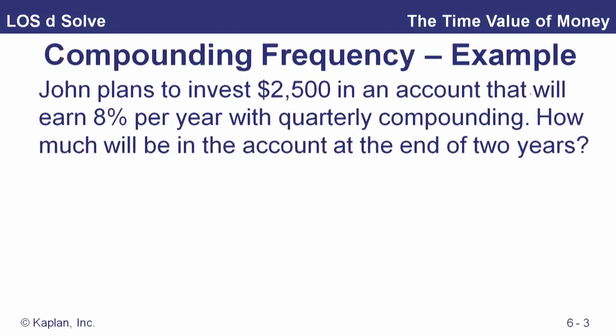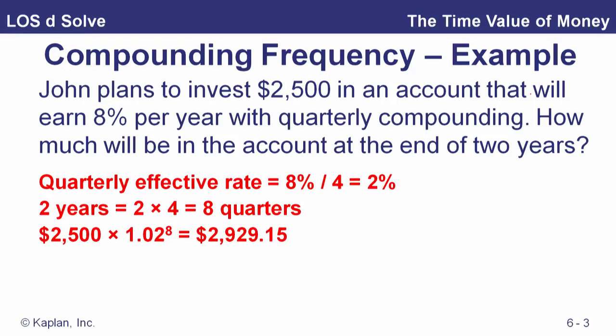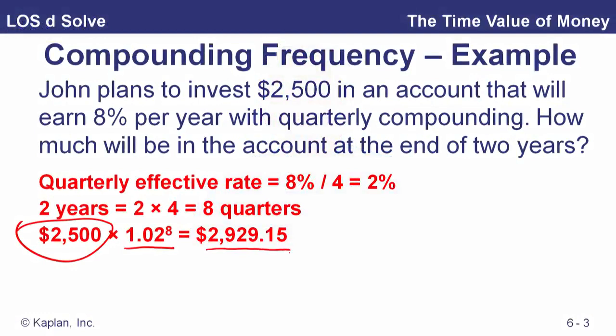Let's look at a compounding frequency example. John plans to invest $2,500 in an account that will earn 8% a year with quarterly compounding — that's a 2% effective quarterly rate. How much will be in the account at the end of two years? Over two years, we have eight quarterly periods. So we take 1 plus 2% to the eighth power and multiply that by the initial investment of $2,500. That gives us an ending value at the end of two years of $2,929.15.